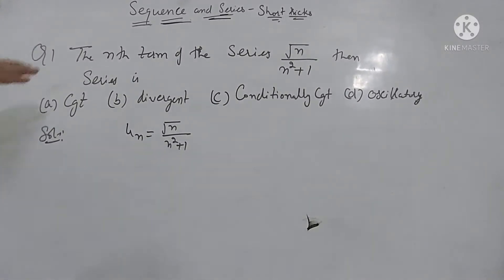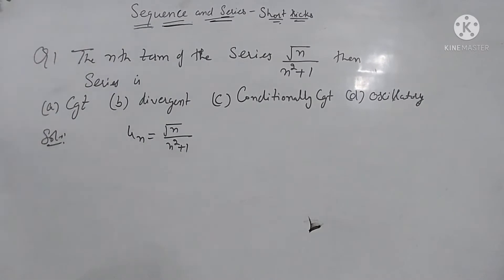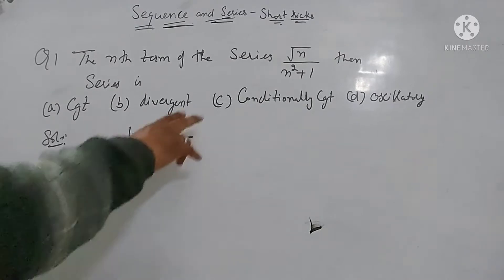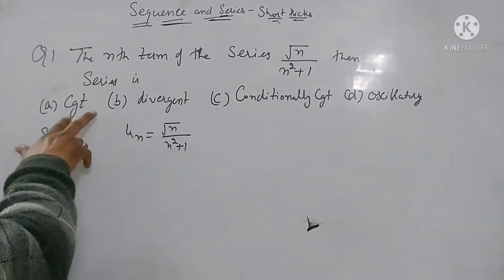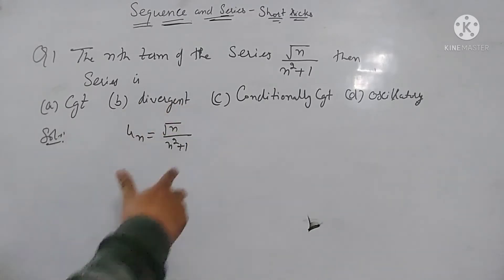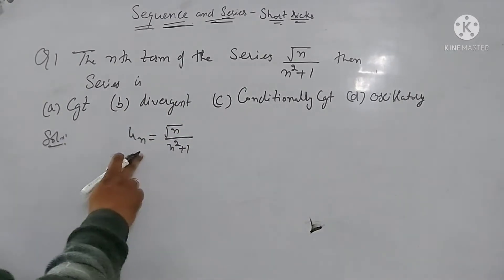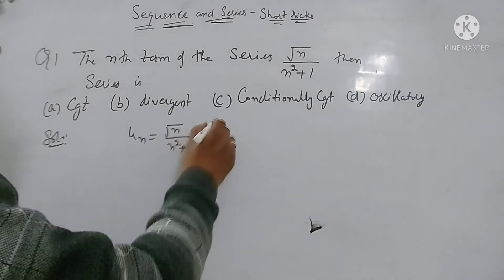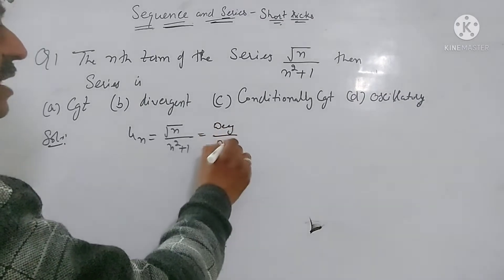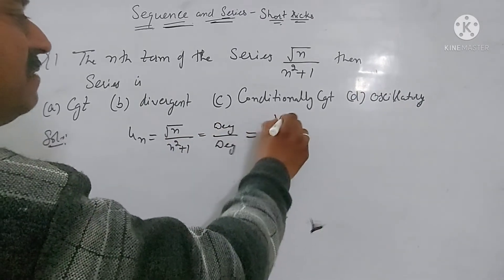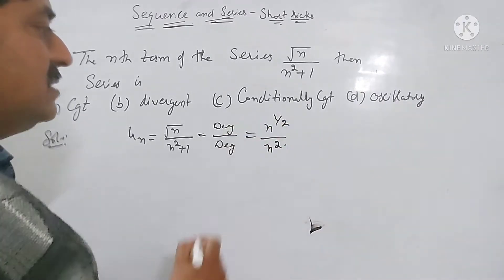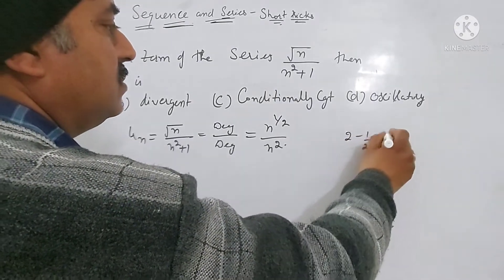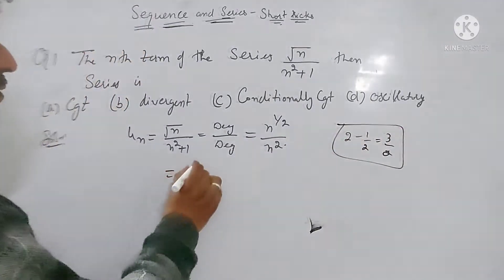Good evening, welcome all. Today we are going to discuss short tricks for sequencing series. The nth term of the series is given, and we have to show whether it is convergent, divergent, conditional convergent, or oscillatory. We have the nth term with numerator and denominator. This is 1 by 2, and the highest degree is 2 minus 2 minus 1 by 2, so 3 by 2, giving 1 upon n raised to 3 by 2.